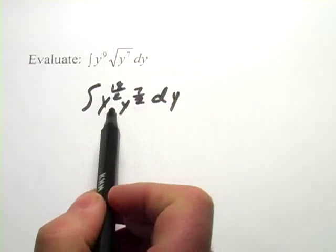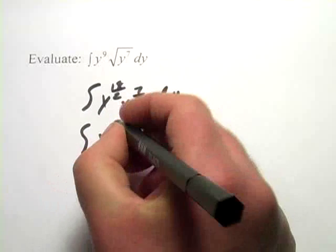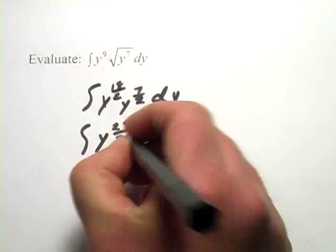And then when we multiply, we add the exponents. So this comes out to be y to the 25 halves dy.